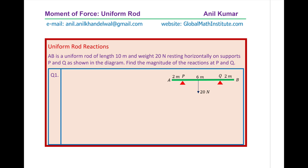Let's begin solving question one. The question is that we have AB, a uniform rod of length 10 meters whose weight is 20 newtons. The weight acts right at the center, which is 5 units from A. We are already 2 units from A to P, so from P to the center point it will be 3 units. Let's call this midpoint capital N. We need to find the reaction at P and Q.